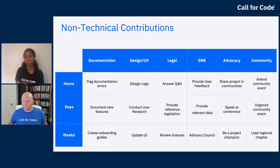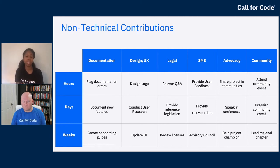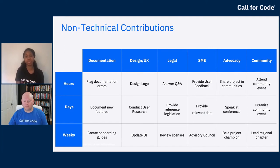If you're not a subject matter expert, you can still be an advocate for the community. Share our projects on Reddit, Slack groups, or other online and in-person communities. If you're a public defender, for example, talk to your professional organization about using our solutions. You can speak at a conference specific to your industry to get the word out about these projects. You can also be a project champion — a more committed, long-term advocate who shares the project on LinkedIn and promotes it within their network.